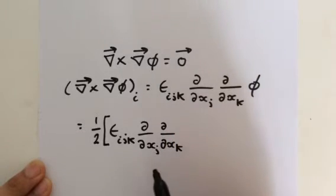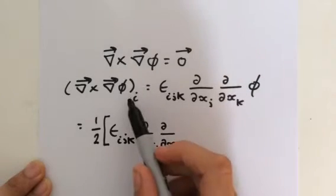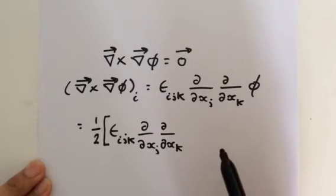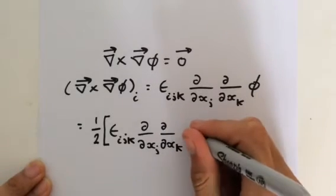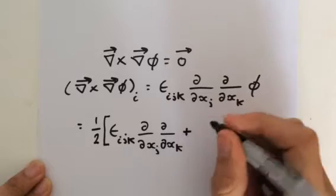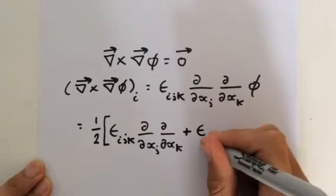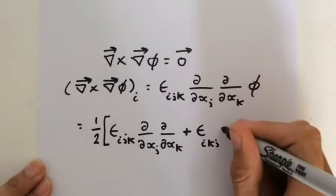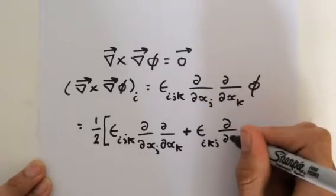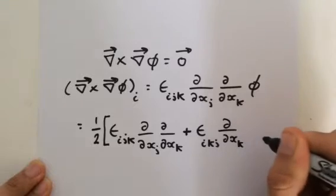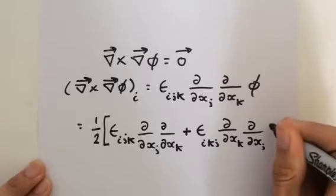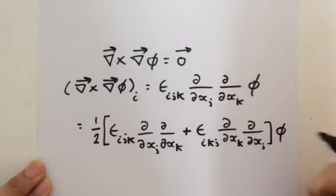Now, k and j are summed, but i is not summed because we have pulled out the i component only. So let's make use of k and j. We're going to add another term — this time with indices i, k, j — and then we have our partial derivatives with respect to x_k and x_j, and then we pull out our phi.